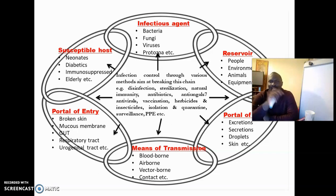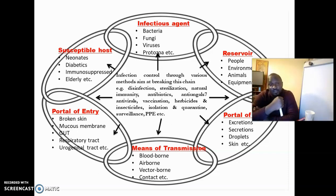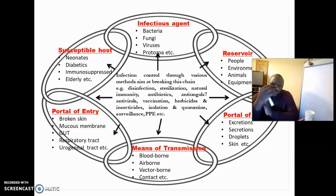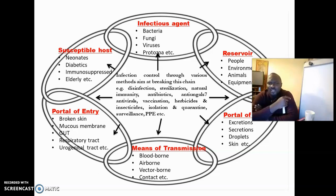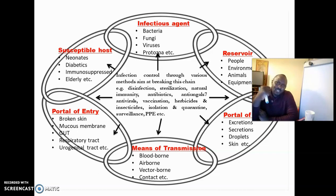From the reservoir, the pathogen must be able to exit. Whether it is from an animal or a human who is a reservoir, it must exit through a certain portal. This raises the question: is it through droplet nuclei, through secretions, through excretions? Is the pathogen being shed in faecal material, or will it come through the skin? Once it leaves the reservoir, it is maintained and transmitted through a certain medium to the likely susceptible host.